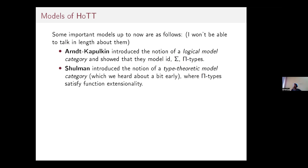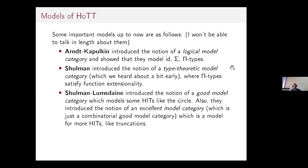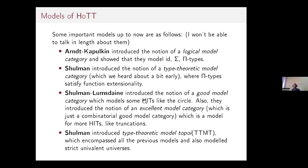Shulman in 2015 introduced the notion of a type-theoretic model category, in which pi types satisfy function extensionality. Shulman and Lumsdaine then introduced the notion of a good model category, which models some higher inductive types like the circle. They also introduced combinatorial good model categories, which they called excellent model categories, modeling more higher inductive types like truncation.